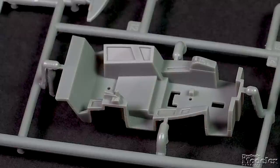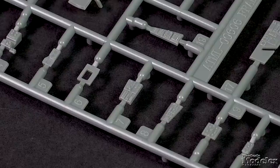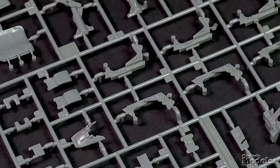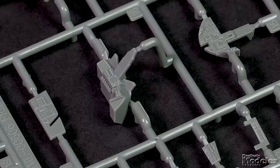The two-place cockpit tub featuring separate parts for the console panels gets multi-part ejection seats, optional crew figures, and instrument panels.